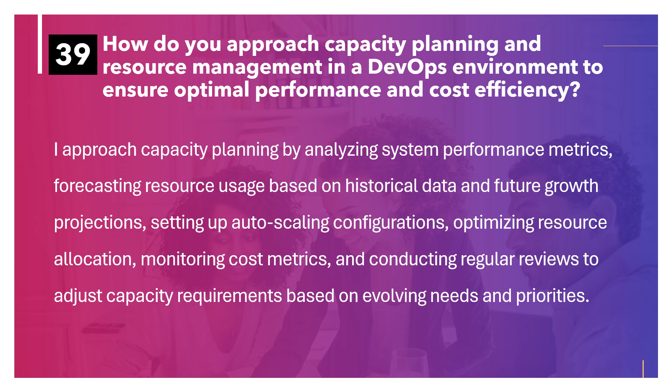How do you approach capacity planning and resource management in a DevOps environment to ensure optimal performance and cost efficiency? I approach capacity planning by analyzing system performance metrics, forecasting resource usage based on historical data and future growth projections, setting up auto-scaling configurations, optimizing resource allocation, monitoring cost metrics, and conducting regular reviews to adjust capacity requirements based on evolving needs and priorities.